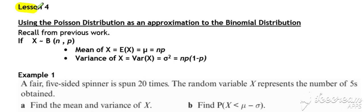In lesson 4, we look at when the Poisson distribution can be used as an approximation to the binomial distribution.